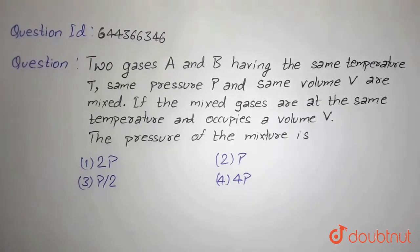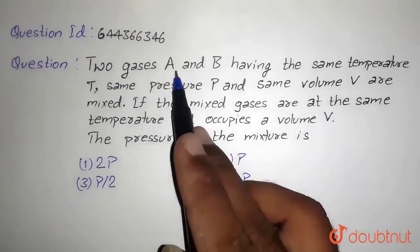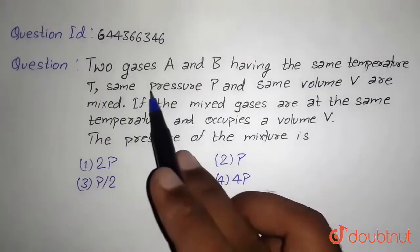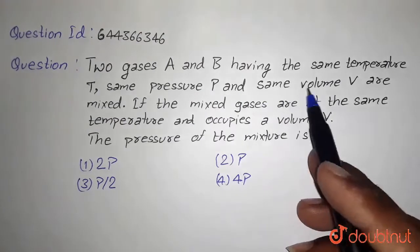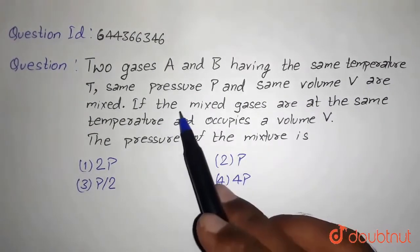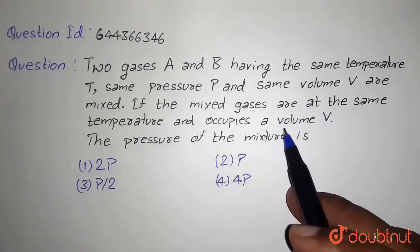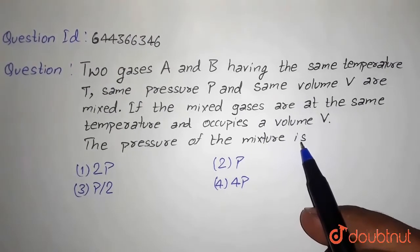Hello students, so here we have the question. Two gases A and B having the same temperature T, same pressure P and same volume V are mixed. If the mixed gases are at the same temperature and occupies the volume V, the pressure of the mixture is.